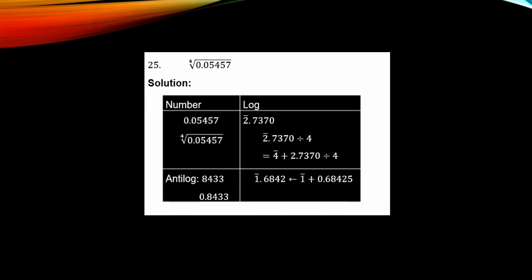Example 25 is on roots: find the fourth root of 0.05457. The number is 0.05457; with two zeros before 5, the characteristic is bar 2. For the mantissa, check 54 under 5, difference 7, giving 7370.